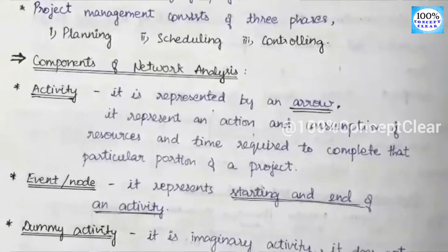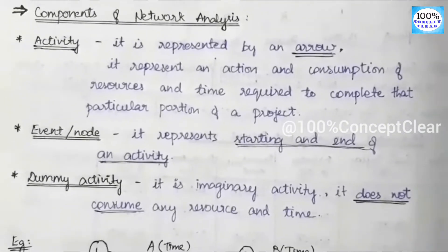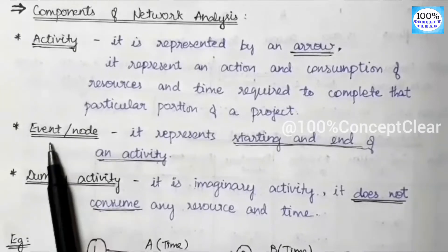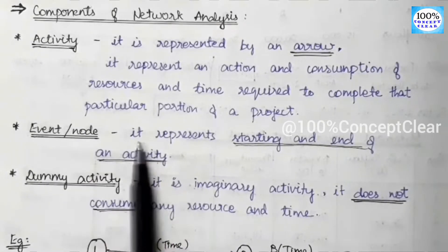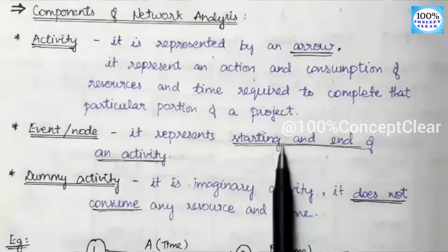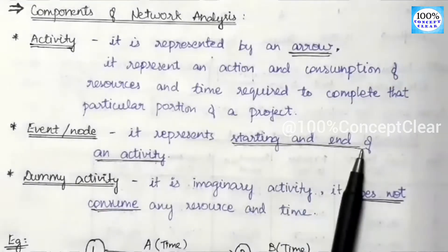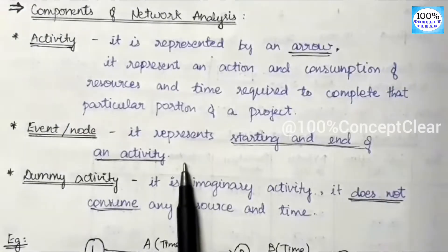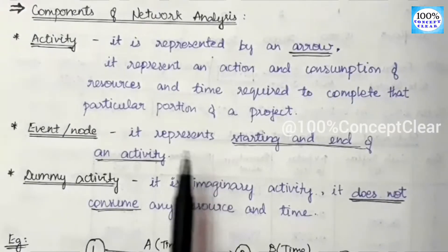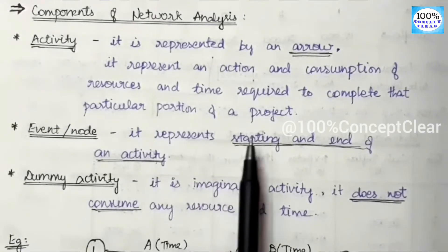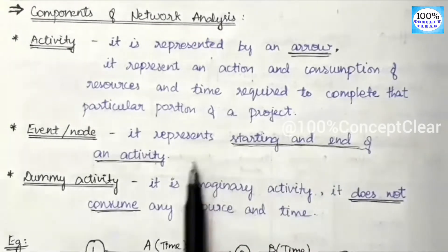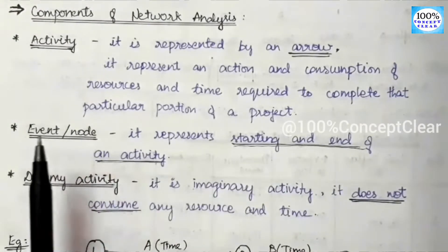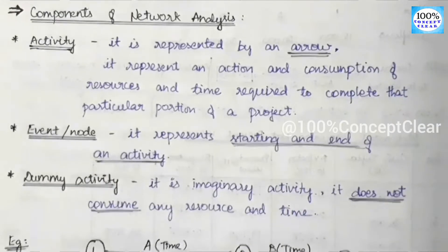Next component is event or node. An event is a node. It represents the starting and end of an activity. The starting and ending points of an activity represent the event.